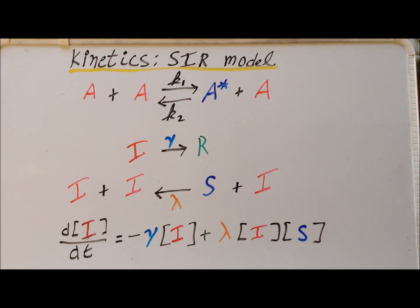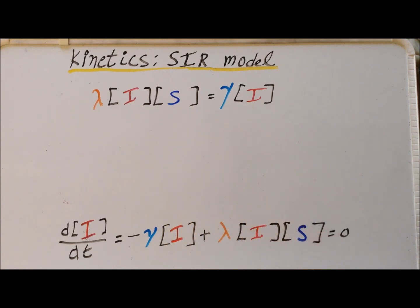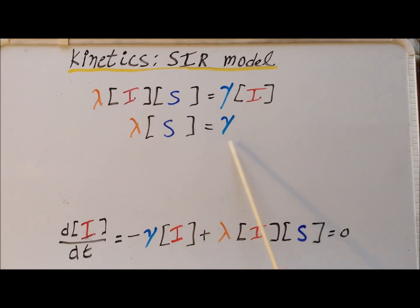One thing we would often do in the kinetics of chemical reactions is to attempt to set this concentration equal to zero — to look at what happens at a steady state. We apply the steady state condition, set the derivative equal to zero, and that gives us that lambda times I times S is equal to gamma times the concentration of I at the steady state. So long as the concentration of I is not equal to zero, we can divide through, and our steady state condition becomes: lambda times the concentration of susceptibles is equal to gamma.